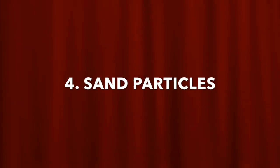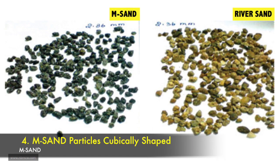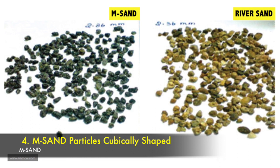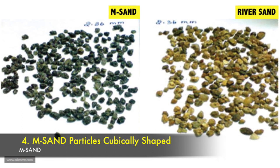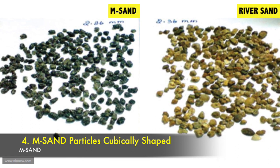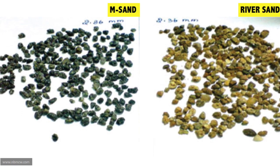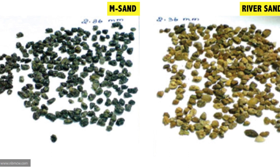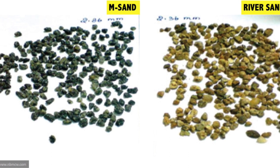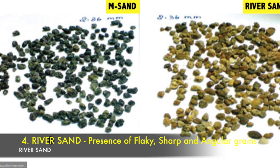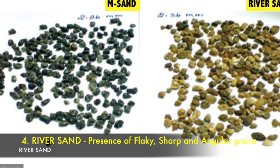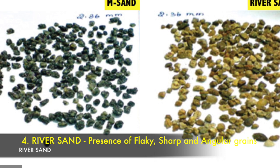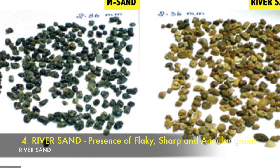Point 4 — M sand: Sand particles of M sand are cubically shaped, which makes bonding stronger. River sand: Excessive presence of flaky, sharp, and angular grains makes bonding weak.